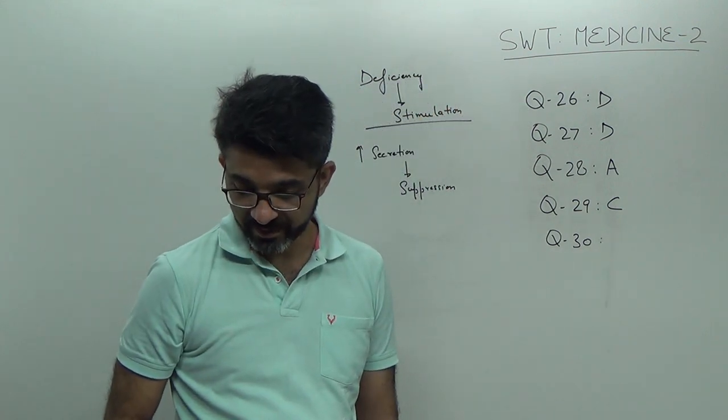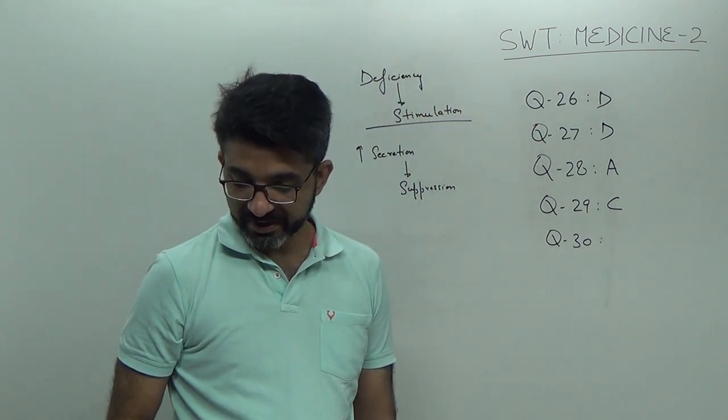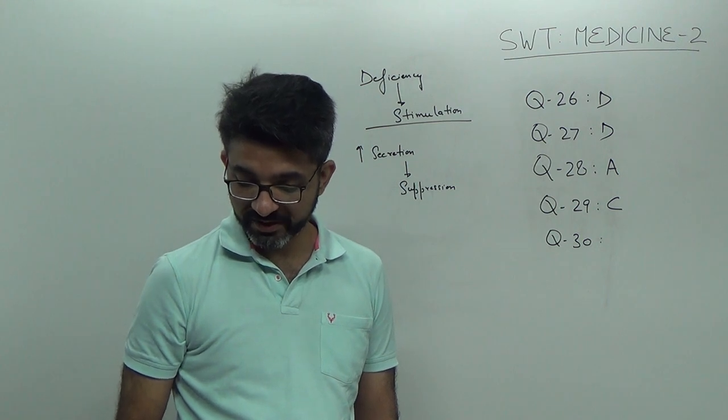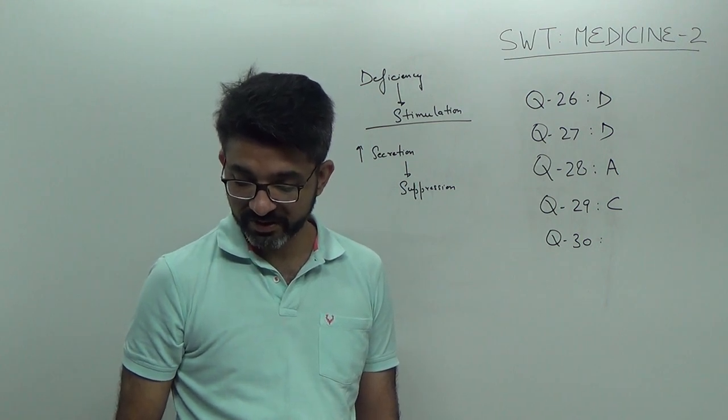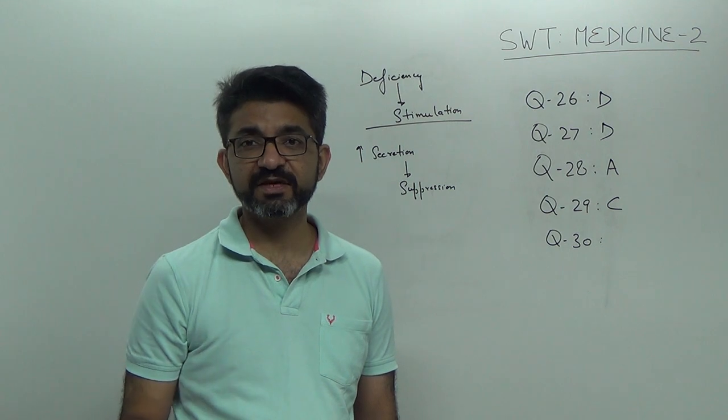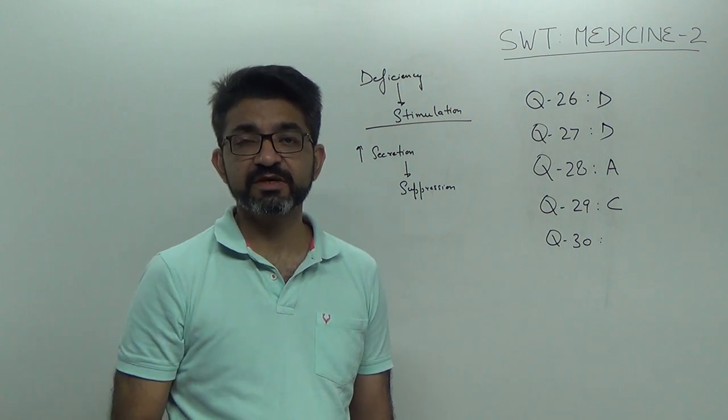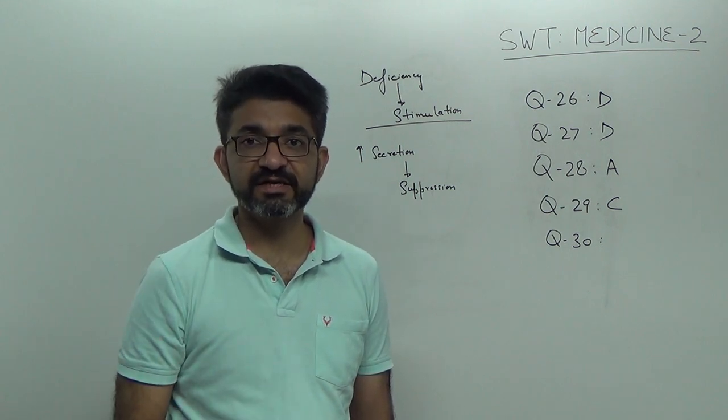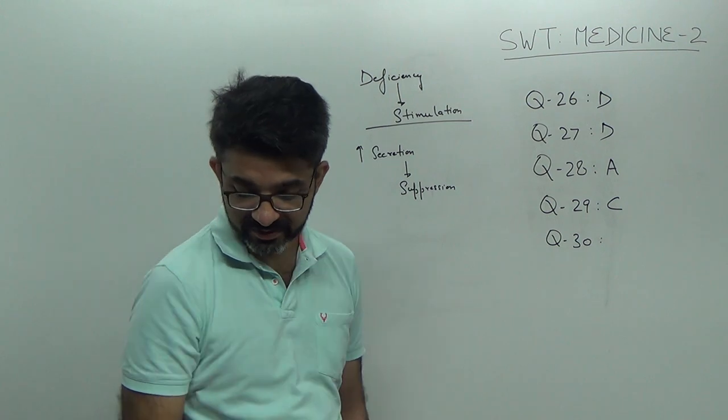Question number 30. A patient, male patient, complains of loss of erection, low testosterone, high prolactin level. So, high prolactin with suppression of other hormones is a classical feature of adenoma pituitary. Right. So, answer is A.